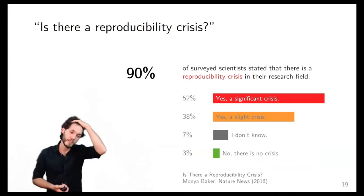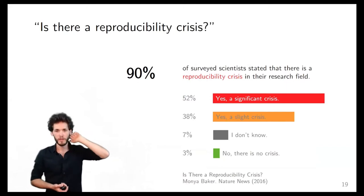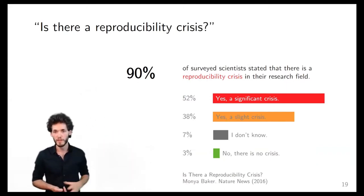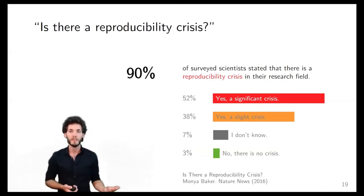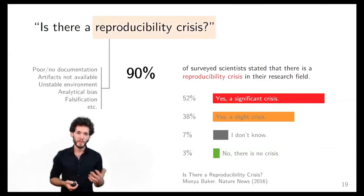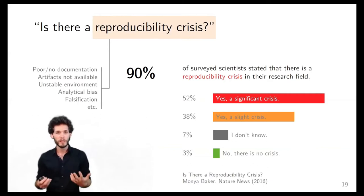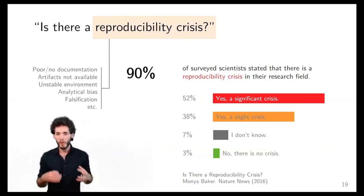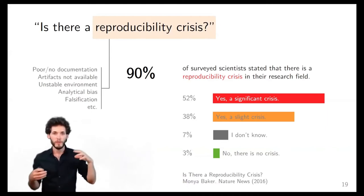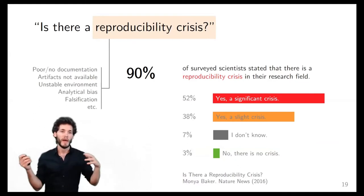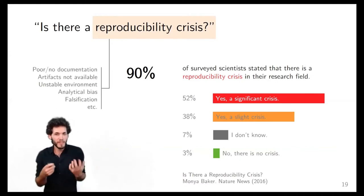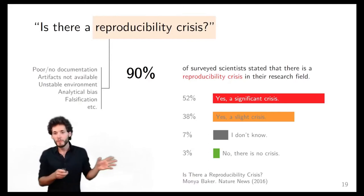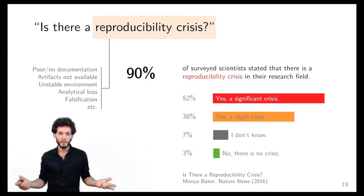A couple of years back, there was an interesting survey published in Nature by Baker, who asked across many different fields whether scientists believe there is a reproducibility crisis in their field. The numbers are quite striking — a very large majority of people said there is some kind of problem. This problem may have many sources: poor documentation, people not sharing their code, even falsifying data. It's not entirely clear what the problem is, but there is something of a problem.